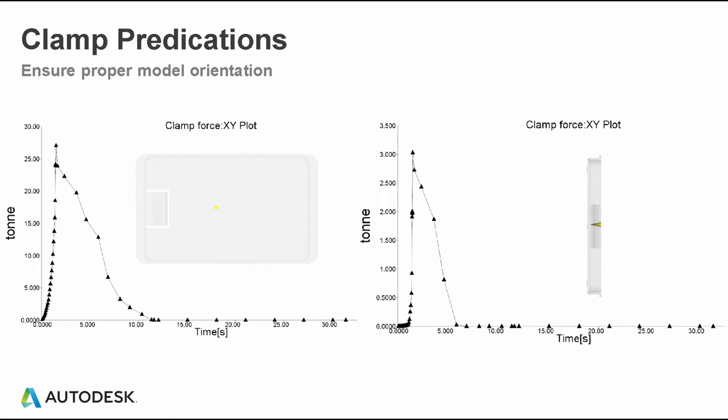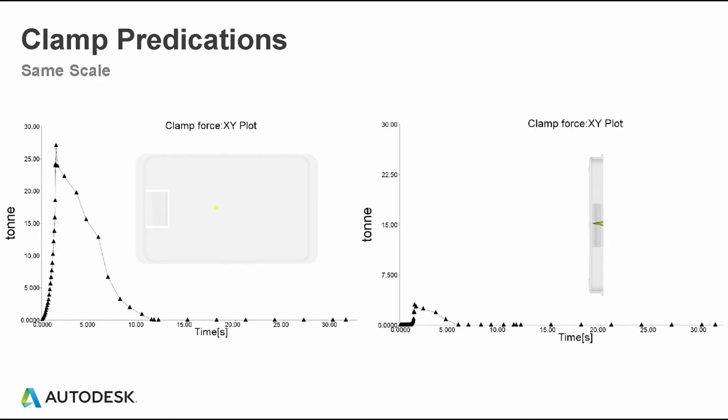I have a simple tray that is in the correct Moldflow position and one orientated 90 degrees in the incorrect position. At first pass, the clamp force XY plots look like they have a similar trend, but if we look at the tonnage over time: on the corrected plot we have about 27 tons, while on the incorrect one we're at just about three tons. The model orientation heavily influences clamp force. When comparing two plots, it's advantageous to make sure they're on the same scale — adjust the second plot's Y range to match the first so you get a true comparison.